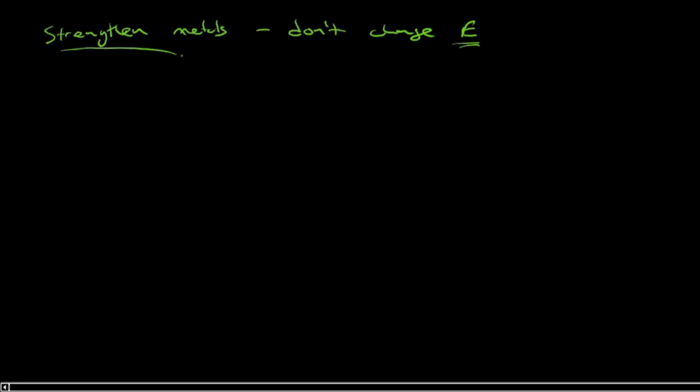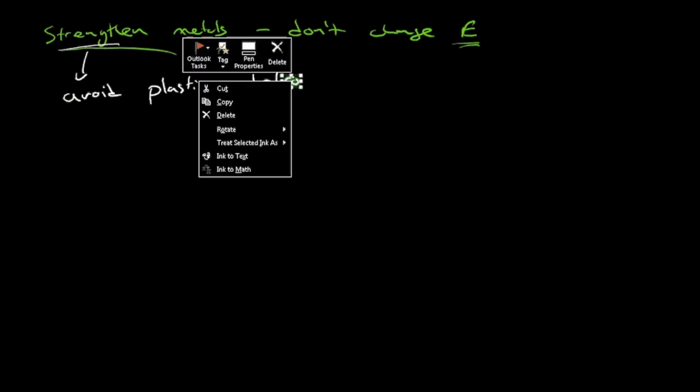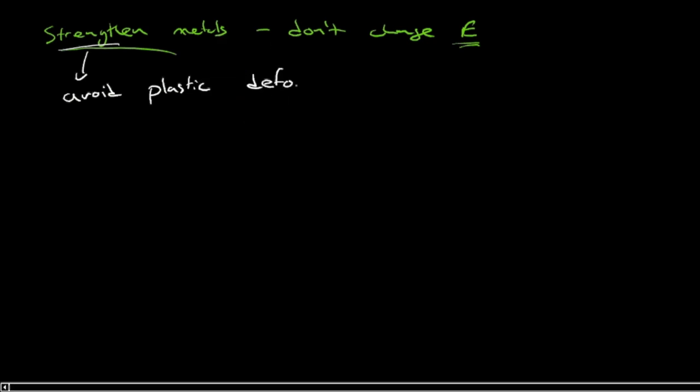Well, we've got to first understand what's happening. So strength, what's strength about? Strength is about avoiding plastic deformation. So let's understand how plastic deformation occurs. So let's look at that.